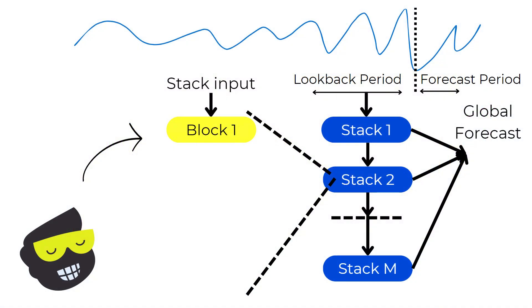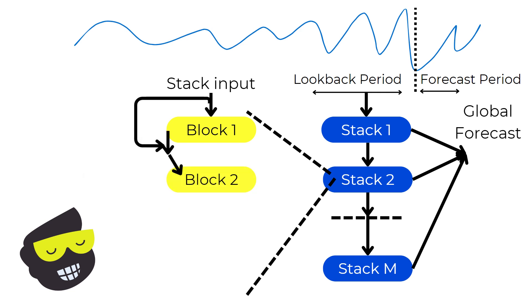Within each stack, the data is processed through multiple blocks. Block 1 takes the stack input, which could be the original look-back period data or the residuals from the previous stack, and uses this input to generate a forecast and a backcast. For example, if block 1 receives the past 24 hours of electricity usage as input, it produces a forecast for the next 24 hours and a backcast to approximate the input data. The backcast helps refine the model's understanding, and the forecast contributes to the overall prediction.